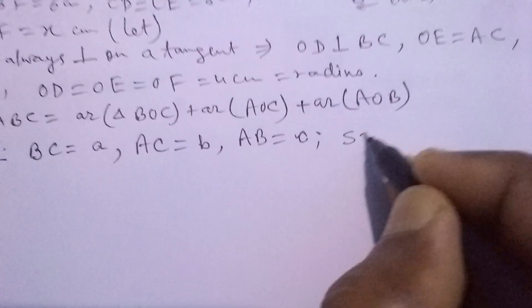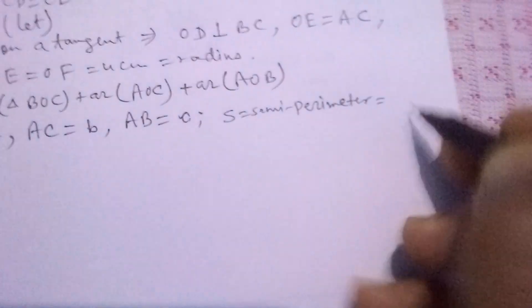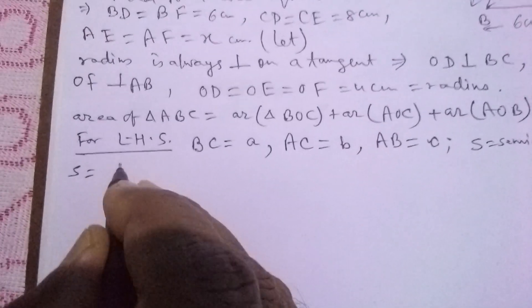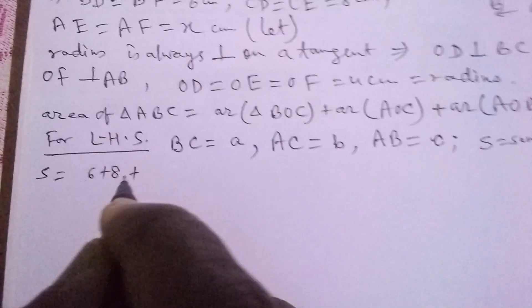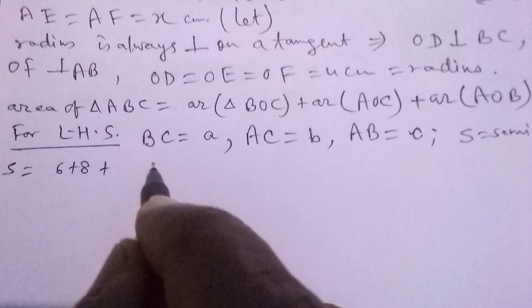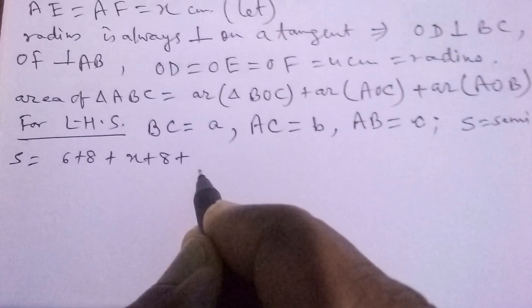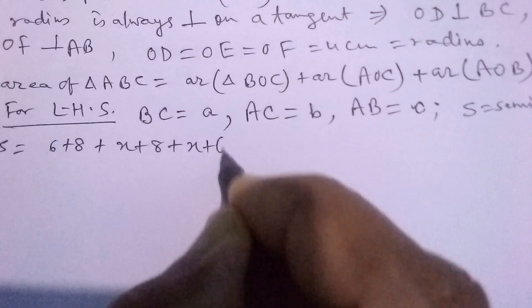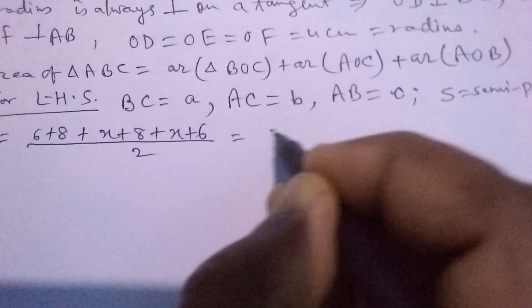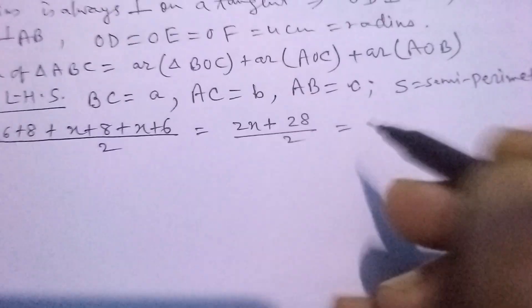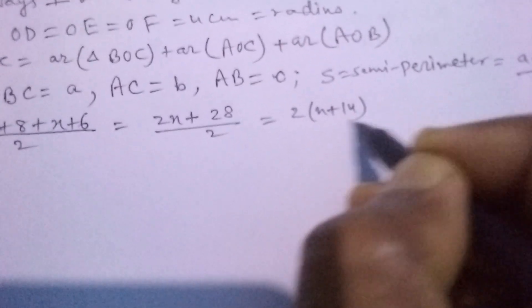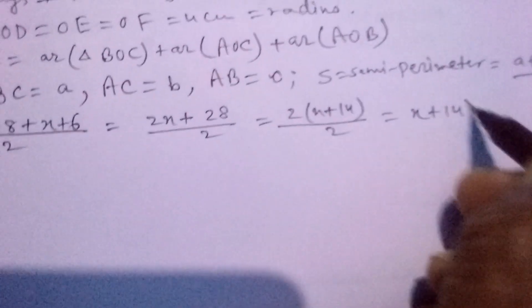We will find S, the semi-perimeter, which equals (A+B+C)/2. So S equals 6+8 plus X+8 plus X+6, all divided by 2, which equals (2X+28)/2. Taking 2 common, we get (X+14)/2 times 2 equals X+14cm.